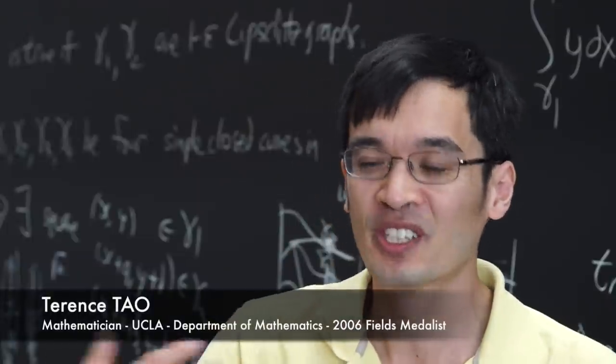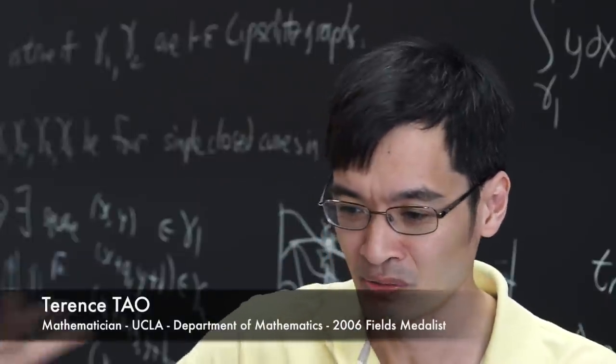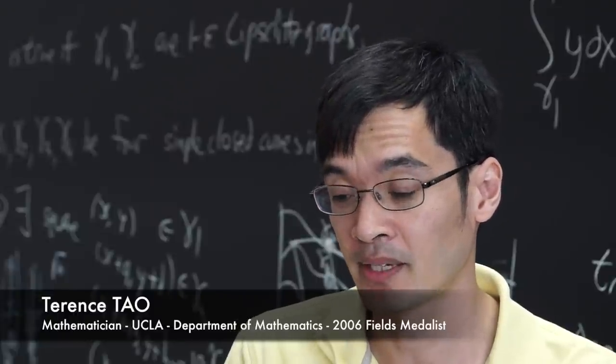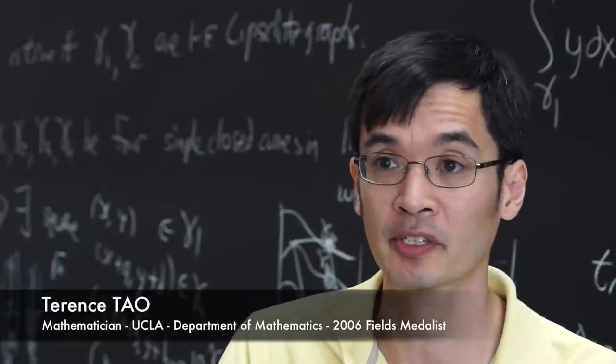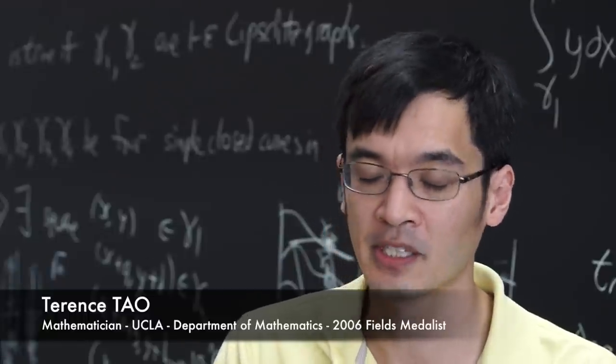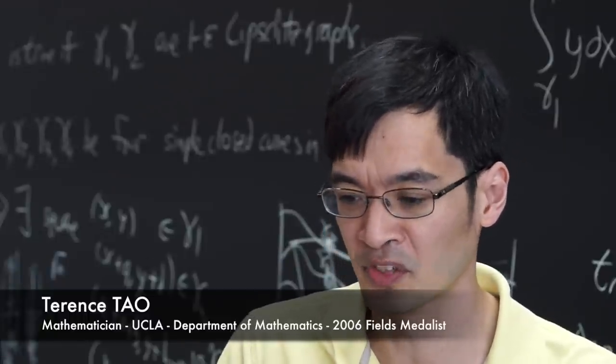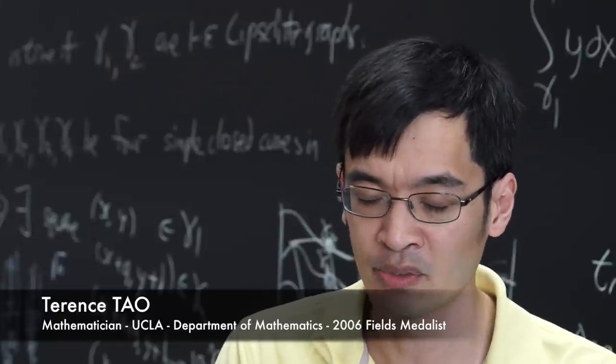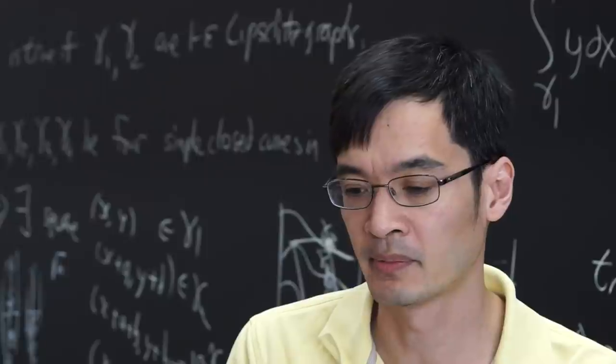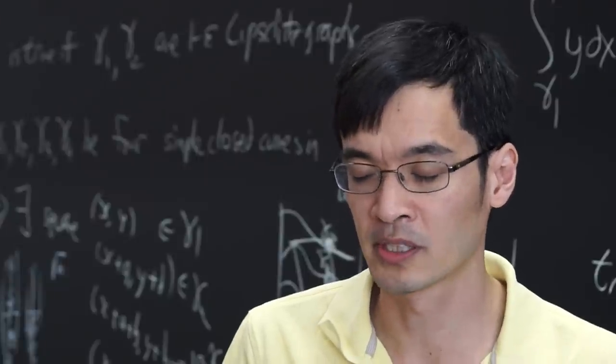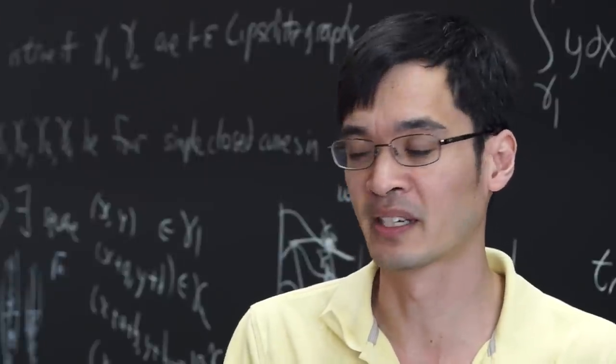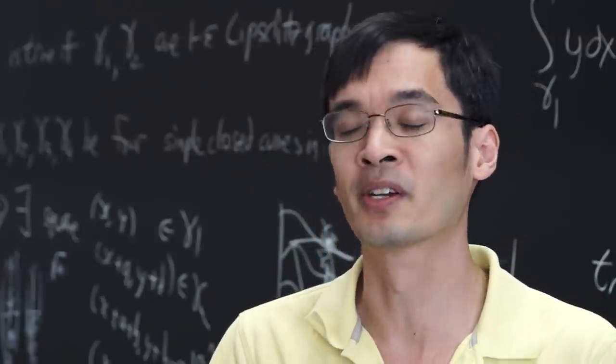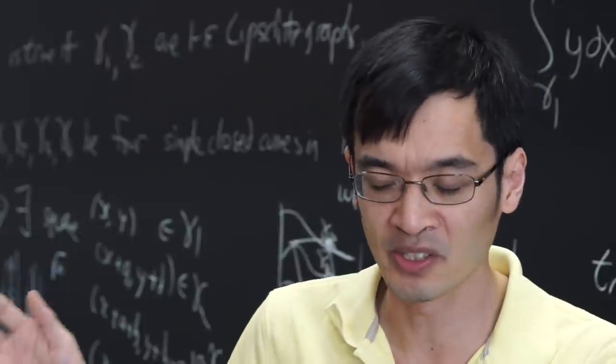So it keeps changing. Every few years, I learn new areas of mathematics. I get influenced a lot by my co-authors. So I started out in harmonic analysis, sort of a study of waves. And then when I came to UCLA, I met another postdoc who was studying partial differential equations, and then I got interested in that. And then I met Ben Green, who was working in number theory, I got interested in number theory, and I got interested in combinatorics.